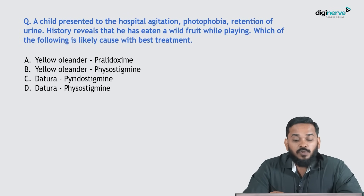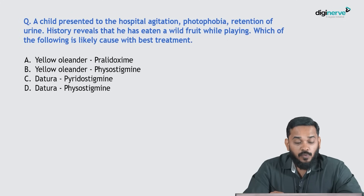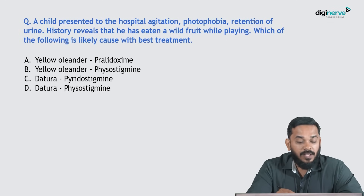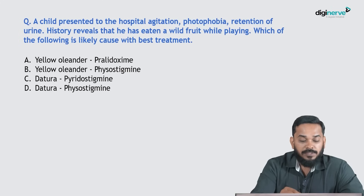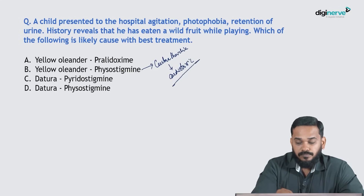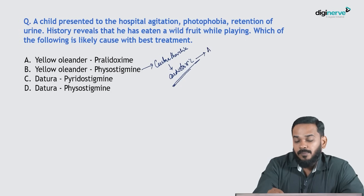A child presented to the hospital with agitation, photophobia, and retention of urine. History reveals he consumed a wild fruit while playing. The two options given are yellow oleander and datura. Yellow oleander contains cerebrotoxin, which is a cardiotoxic agent, resulting in AV block.